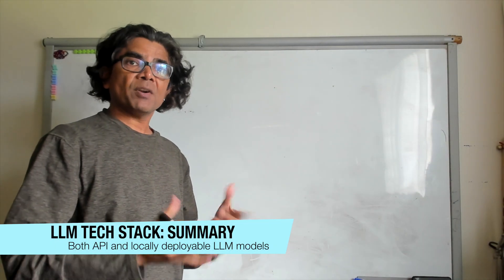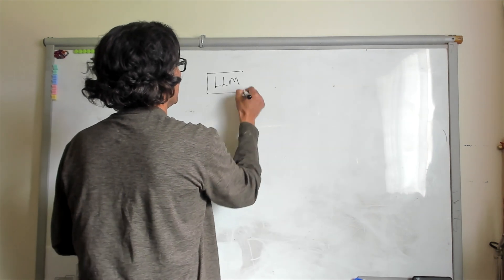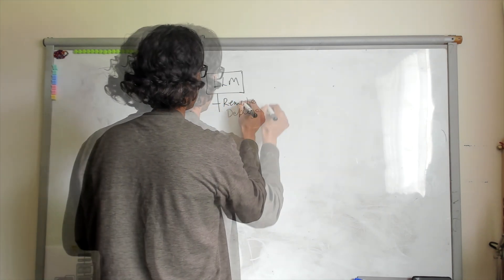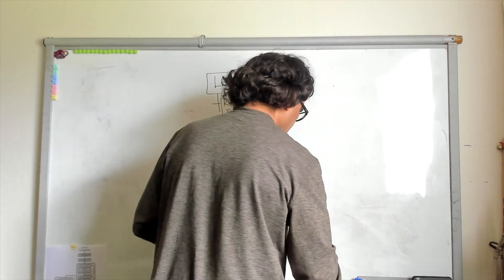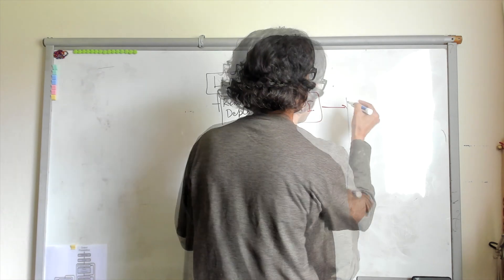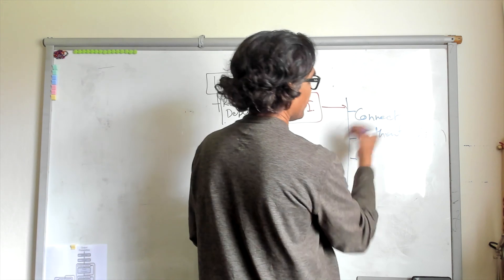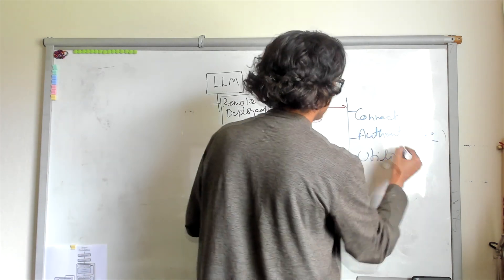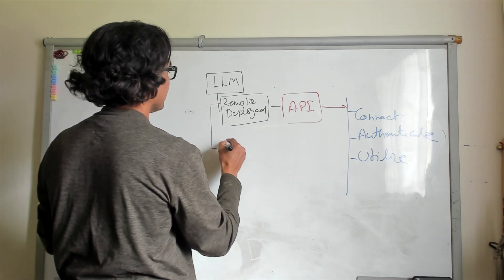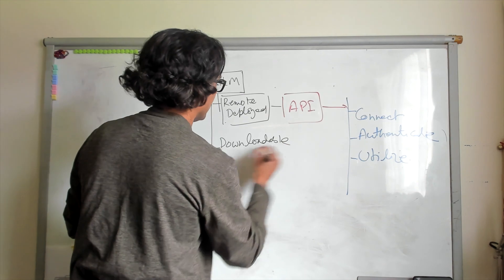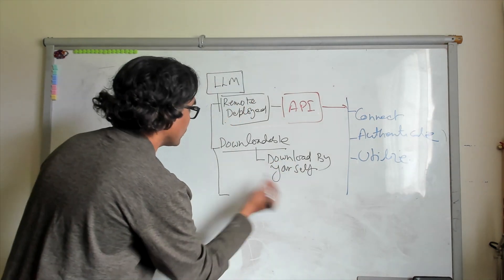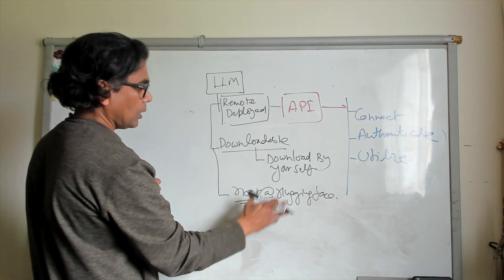To summarize what we have covered in this video: large language models are deployed in two ways. They are remotely deployed at the organization, and in that scenario they are only accessible through the API. With that API, you connect, authenticate, and then utilize. The second option is that the model is available as a download — a downloadable model — meaning you can download and host it yourself. Or you can host it at Hugging Face.